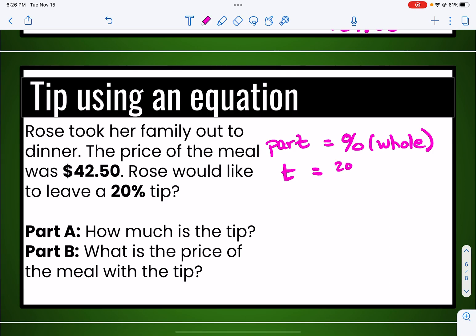The part in this instance that we're looking for is the tip and our percent is 20%. So I'm going to go ahead and write that over 100. And the whole price of the meal was $42.50. Now, before I do it, I like to change the 20 over 100 to a decimal.